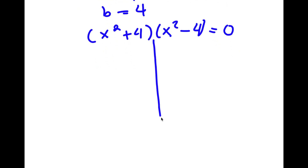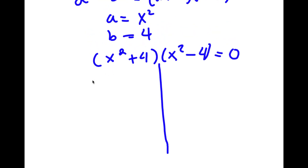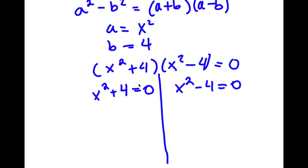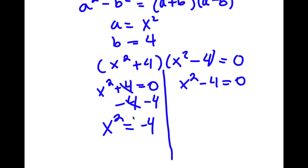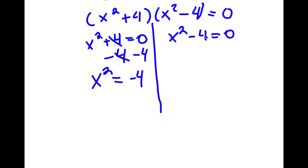Now this gives me two equations: x² plus 4 is equal to 0, and x² minus 4 is equal to 0. For x² plus 4 equals 0, I subtract 4 on both sides and get x² is equal to negative 4. For x² minus 4 equals 0, I add 4 on both sides and get x² is equal to positive 4.